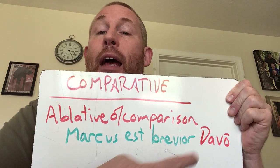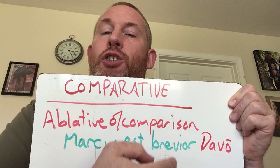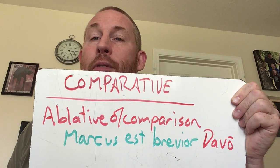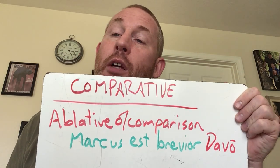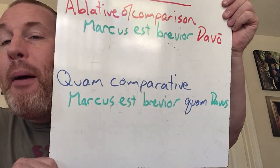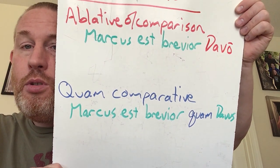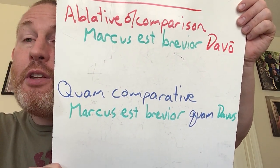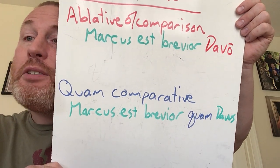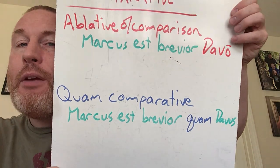So if you see an ablative and you see comparison, you're like, oh, we're comparing two things — Marcus is shorter than the person who is Davus. Ablative of comparison. Now if you don't want to do it that way — for some reason you want to use a lot of ink — you can use the quam comparative. Marcus est brevior quam Davus. Marcus is shorter than Davus. So quam plus the nominative, or ablative of comparison.